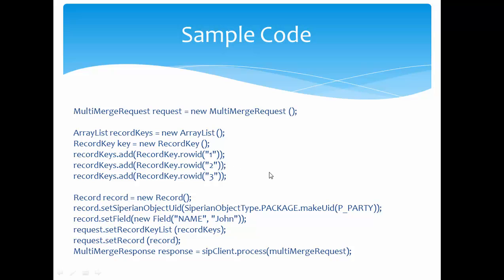In the sample code, we first create an object of MultiMergeRequest using the new operator. We also create an ArrayList to maintain all the record keys. Then we create record keys for each record that will become a cluster after merging. For example, Row ID 1, Row ID 2, and Row ID 3 — for each record we create one RecordKey and set the respective row ID values.